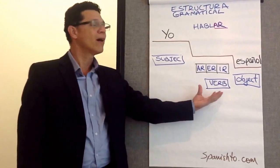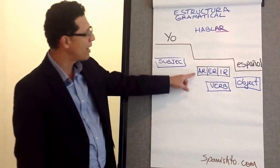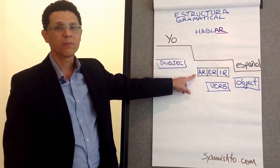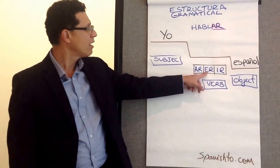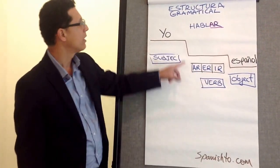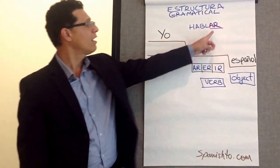The second part is the verb or the message. In Spanish, we actually have three kinds of verbs or messages. The ones that end in AR, ER, or IR. Our example here, hablar, to speak, is an AR verb.